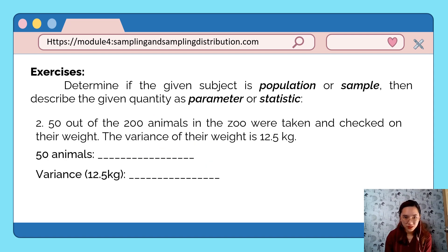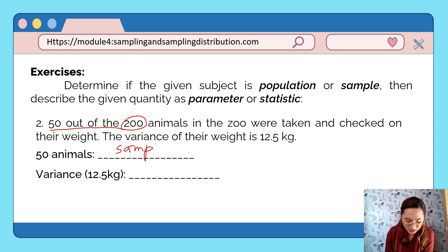Next, 50 out of 200 animals in the zoo were taken and checked on their weight. The variance of their weight is 12.5 kilograms. As you can see, 50 out of 200 - there are 200 animals total in the zoo. If you only took 50, therefore these 50 animals are our sample. The data of 12.5 kilograms variance from the 50 animals is the statistic because the data came from our sample.